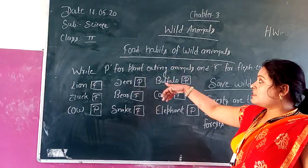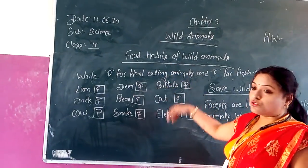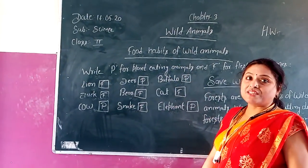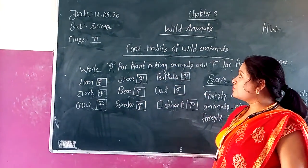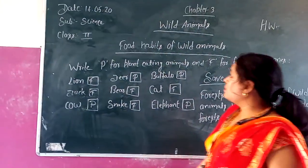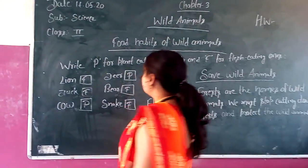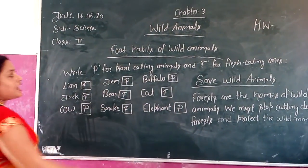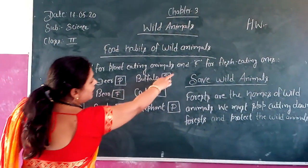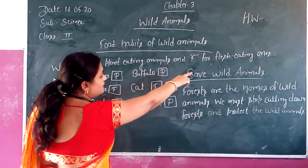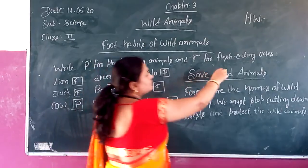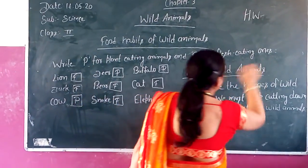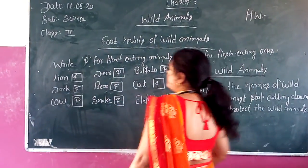These are some objective type questions. Write P for plant eating animals and F for flesh eating ones.